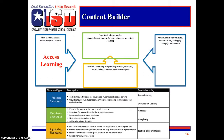The back end of the Content Builder also ends with the process standards, because process standards flow through the instruction and the learning process. The final process standard you select will consider how students will demonstrate, communicate, and apply concepts and content. By systematically planning out the standards, the educator has addressed the three essential questions: What do you want students to learn? How will you know they have learned it? And what will you do if they don't?